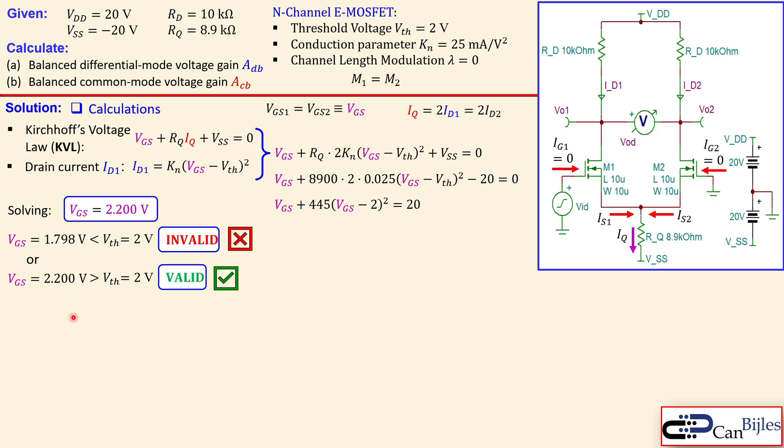When you have calculated VGS, you can now use the formula for ID1, which is also same as ID2 since this is a symmetric circuit. That will give you ID1 equals 0.025 times 2.2 minus 2 squared, which gives exactly 1 milliamp. That means we have a current flowing here of 1 milliamp, it's also here, that means IQ will be 2 milliamps.